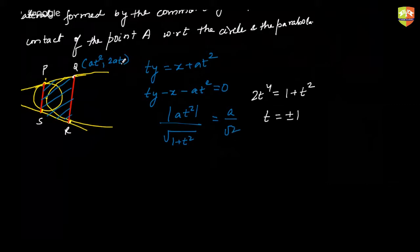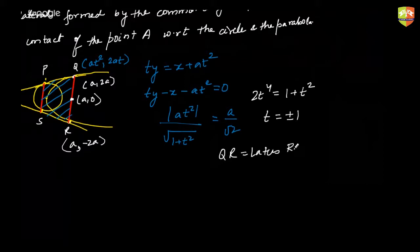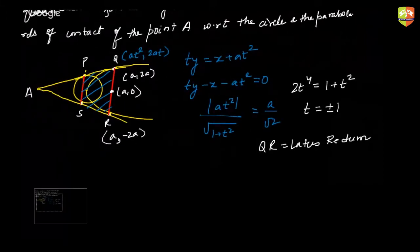That means the points on the parabola are (a, 2a) and (a, -2a), passing through the focus — so QR is the latus rectum. Now I want to find points P and S on the circle.